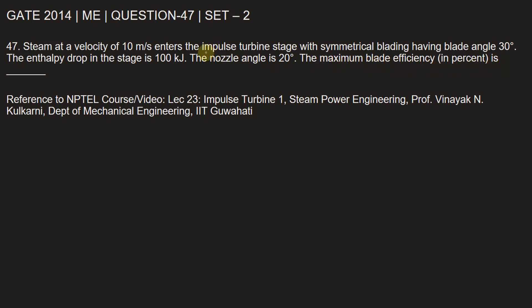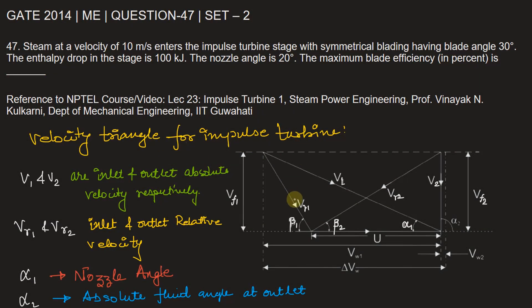Let's see the velocity triangle for impulse turbine. The velocity triangle for impulse turbine where V1 and V2 are the inlet and outlet absolute velocity. Vr1 and Vr2 are the relative velocity at inlet and outlet. Vr1 is the nozzle angle and Vr2 is the absolute fluid angle at the outlet. U is the mean blade velocity. Let's write U mean blade velocity.